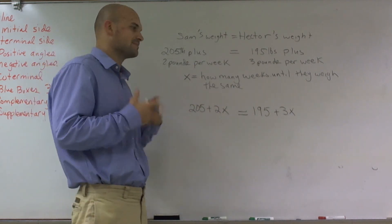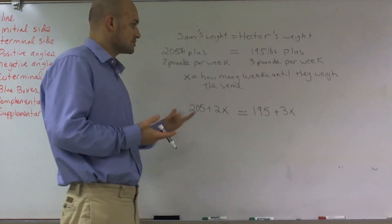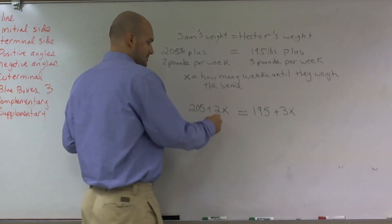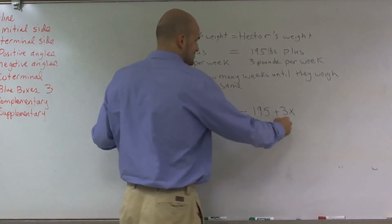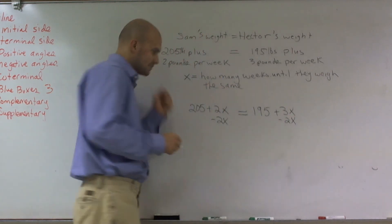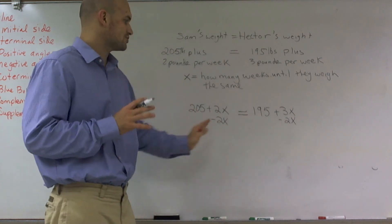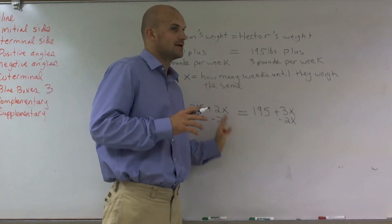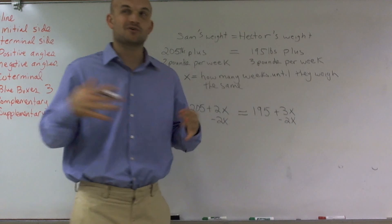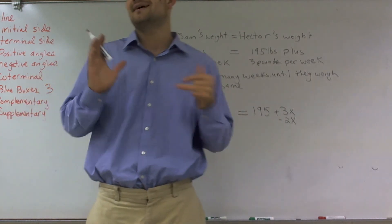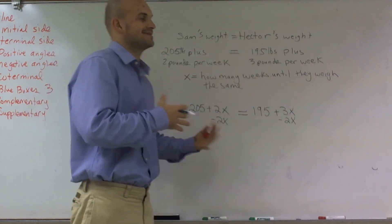Now I just solve for X. I'm going to subtract 2X on both sides. You could have subtracted 3X, but I need to get the variable onto the same side, and it's easiest to choose the smaller variable. The reason is you're going to avoid negative numbers, and it's still going to give you the same answer.